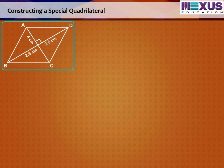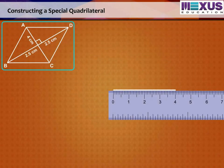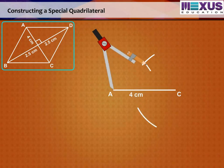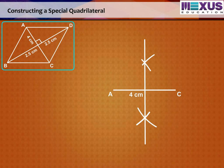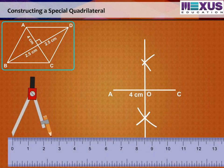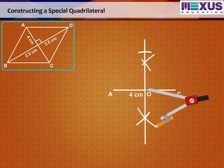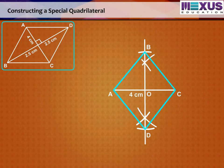So, first, draw AC equal to 4 cm and then construct its perpendicular bisector. Let them meet at O. Cut off 2.5 cm lengths on either side of the drawn bisector. You now get B and D. Now, we can draw the rhombus based on the method described.